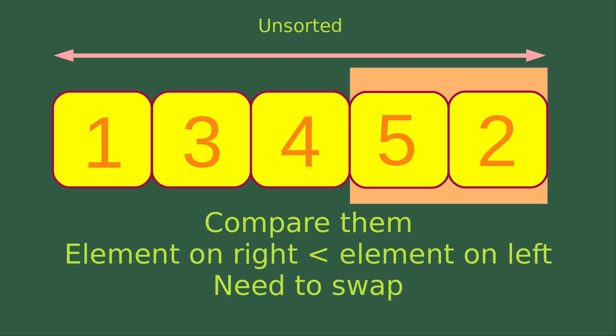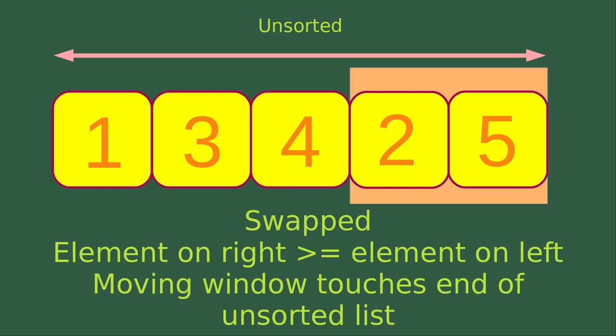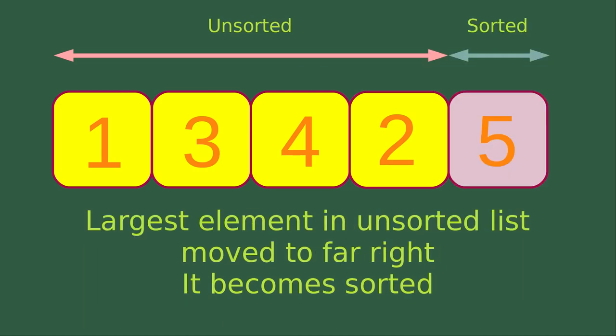I move my window to another two adjacent elements and compare them. The element on the right-hand side is smaller than the element on the left-hand side, so I need to swap the two numbers. The two numbers are swapped, and the moving window has already reached the end of the unsorted list, so we can end one pass of the sorting. The largest element in the unsorted list is already moved to the far right, so that number becomes sorted. I have four unsorted numbers remaining, and I will keep the sorted one untouched.